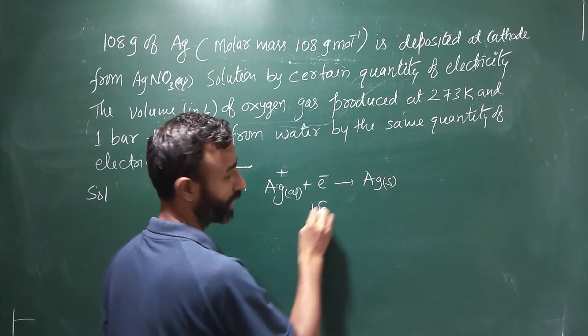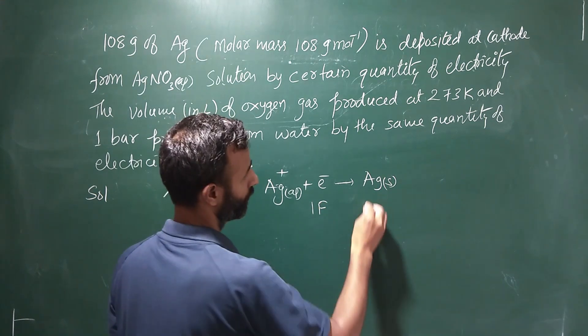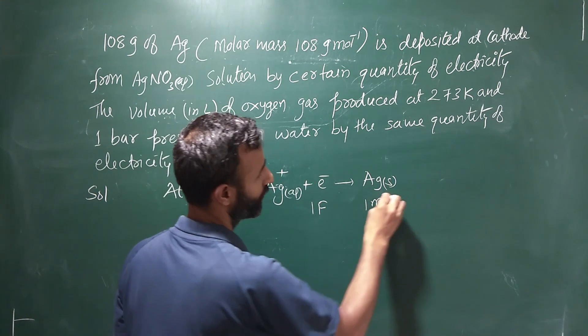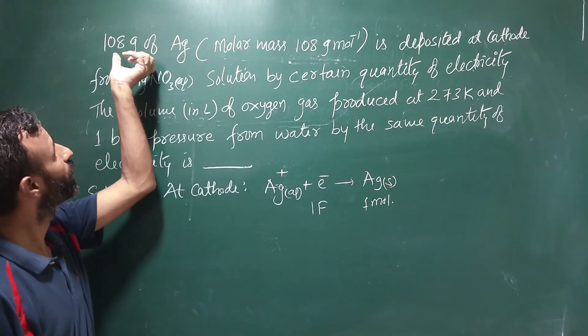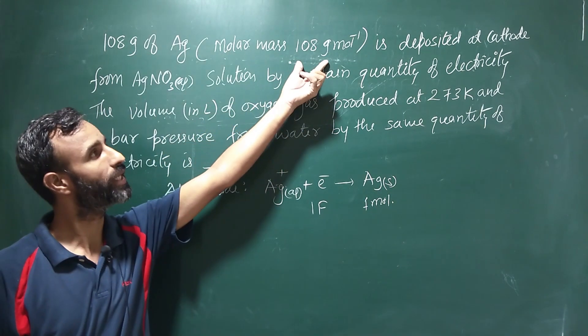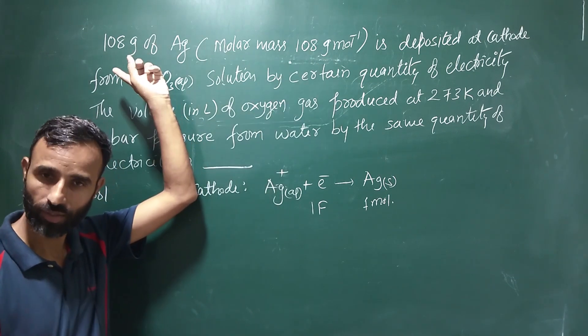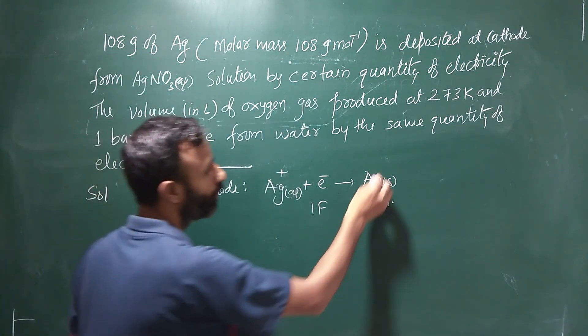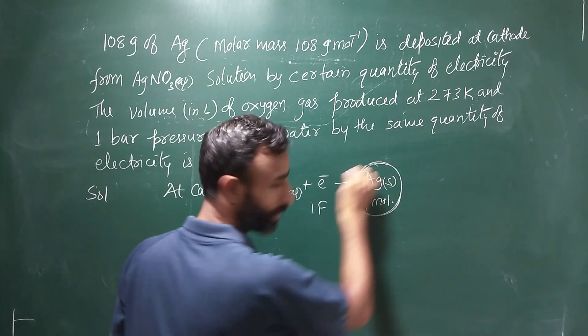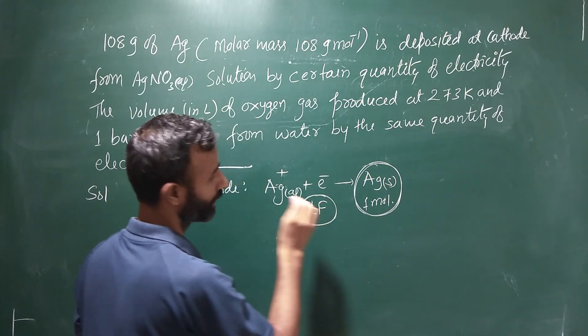If we pass one Faraday of electricity, one mole of silver is deposited. And you know, 108 gram means 108 gram per mole, means one mole. This means one mole of silver deposit, so one Faraday electricity passed by me.